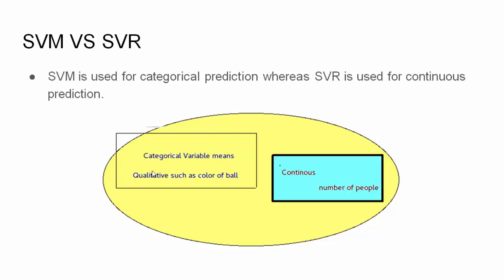If you want to predict whether a particular person is having a disease or not, this is categorical. If you want to predict the color of a ball—red, green, or blue—you go for the classification model.